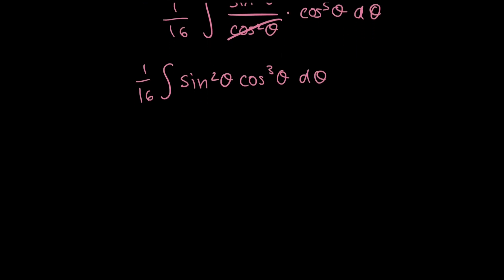So I'm going to basically just split this up into cosine squared theta times cosine theta. And instead of cosine theta, I'm going to be rewriting this as cosine squared theta is equal to 1 minus sine squared theta.